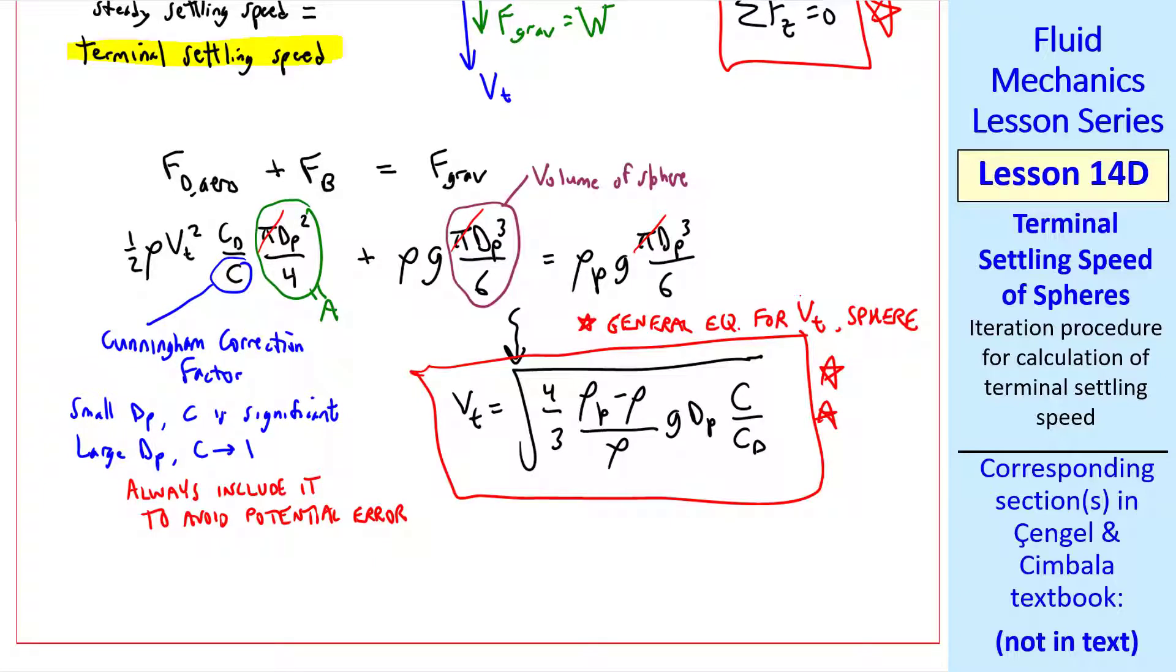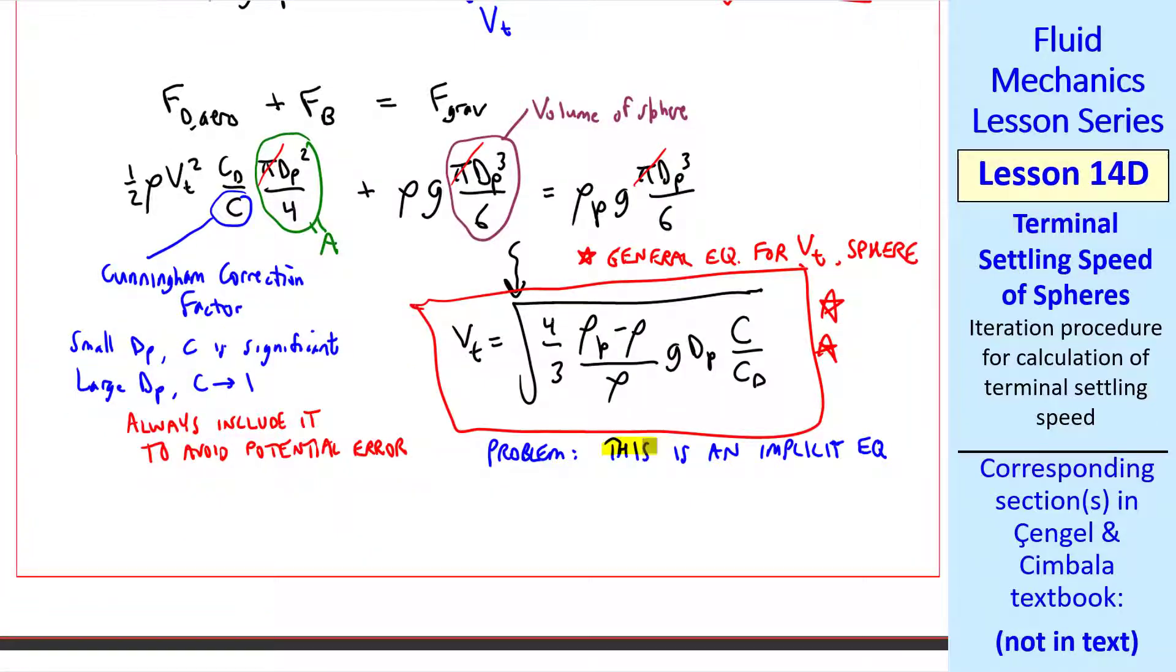This is our general equation for vt of the sphere, the terminal settling speed. The problem is that this is an implicit equation. Why? Well, vt is a function of cd, as we see here, but cd is a function of Reynolds number, and Reynolds number is itself a function of vt. So embedded within this cd is some empirical correlation for cd as a function of Reynolds number, which contains vt. You can't solve this equation directly for vt unless you plug in some very simple expression for cd. So in general, this is an implicit equation. So to solve, we must iterate.